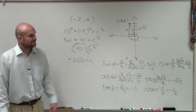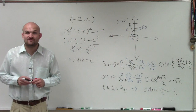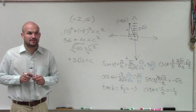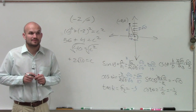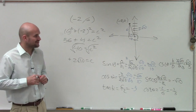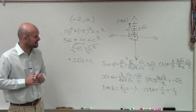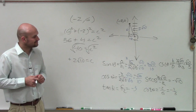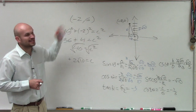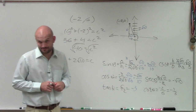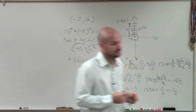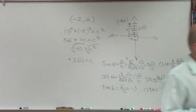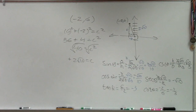So that's how you find your six trigonometric values, ladies and gentlemen, when you are given a point. You guys need to know how to do it for a point. You guys ready for the last one?